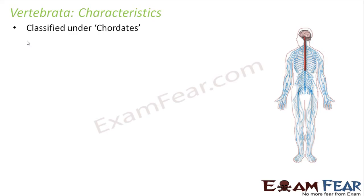Vertebrata is classified under Chordata. Now many people often confuse vertebrates with chordates — they think vertebrata is just another name for chordata, but it is not like that. Vertebrata is a category under chordata. All vertebrates are chordates because they have all the basic features of a chordate, but all chordates are not vertebrates. Urochordata and Cephalochordata are also chordates but they are not vertebrates. So in terms of mathematics, vertebrata is a subset of chordata.